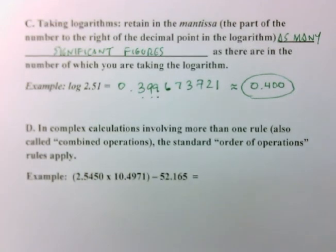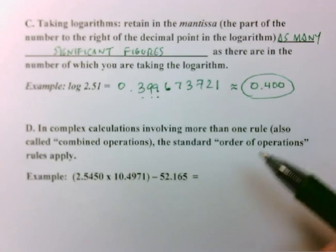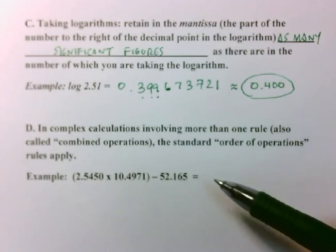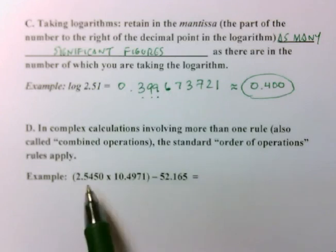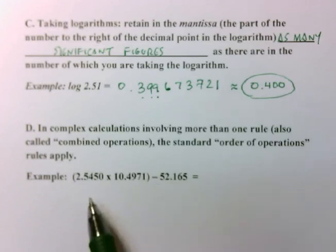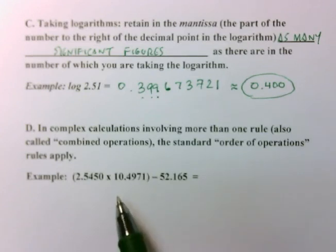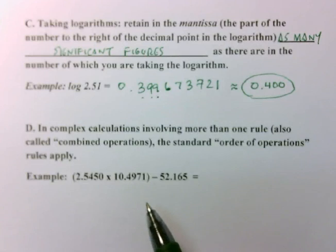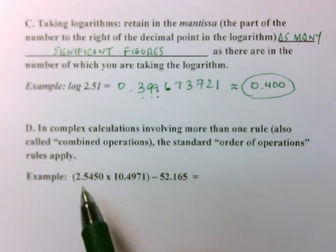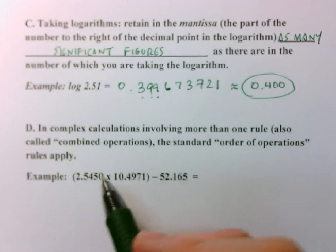Now, the next rule I want to talk about, or the next process I'd like to talk about, is how to deal with sig figs when we have combined operations. So combined operations, generally you're going to use your order of operations rule. Parentheses, followed by multiplication division, followed by addition subtraction.